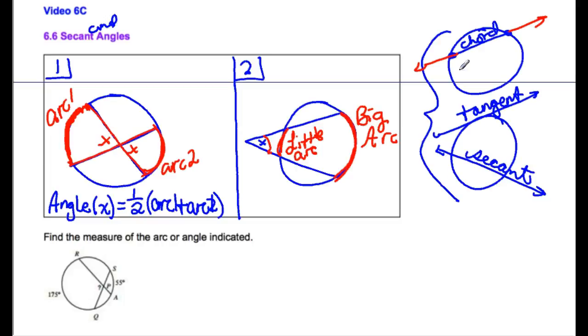The angle created, again I'll call it angle, which on my diagram is x. The angle created is equal to one half, same as over here, but instead of adding the arcs we subtract them. We have to make sure we grab the big one first because we can't go negative. So we do big arc minus the little arc.